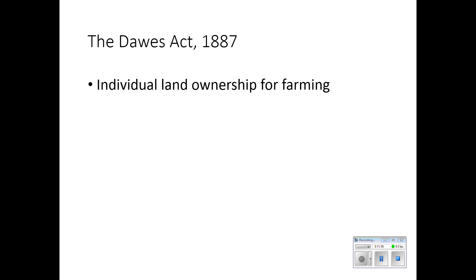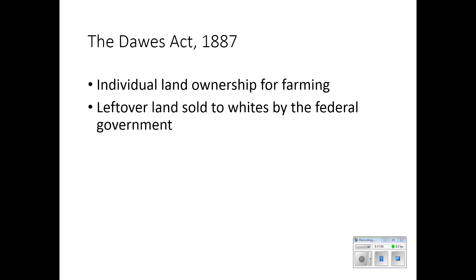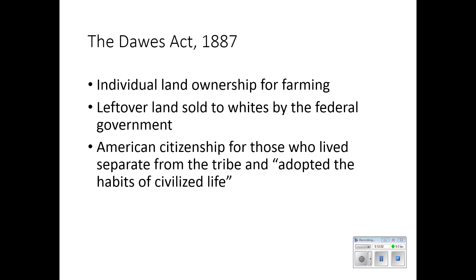In 1887, Congress passed the Dawes Act. A lot of it was well-intentioned — they thought to make farmers out of Indians and give them individual land ownership rather than group ownership on reservations. But there was a lot of leftover land, and that land was sold to whites by the federal government and passed forever out of the hands of Native Americans. If one lived separate from the tribe and adopted the habits of civilized life, then one could become an American citizen.